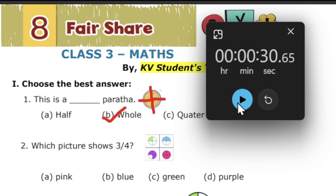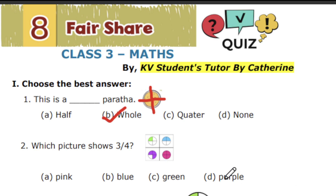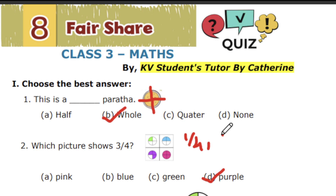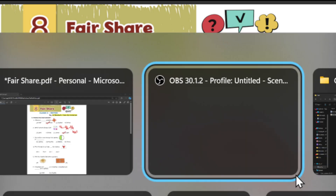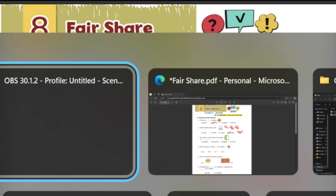The correct answer is purple. In green, only one part is shaded, so that is one-quarter. In blue, half is shaded, which is two-quarters. In purple, it is three-quarters. The pink one is whole because everything is shaded — it's four-quarters, which equals one, also known as the whole part.